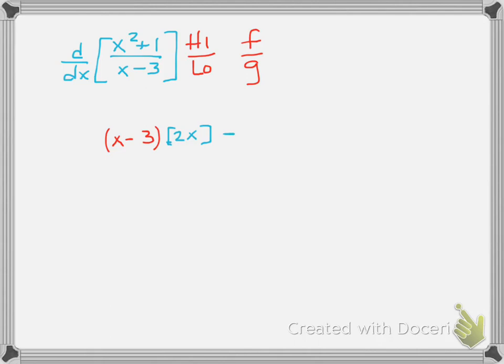Then we subtract, and we say, now high, or x squared plus 1, times the derivative of the low. Now the derivative of x is really just 1, because that's like 1x, and the minus 3 drops out. And all of that is then over low squared. So there is your derivative.